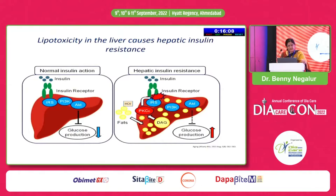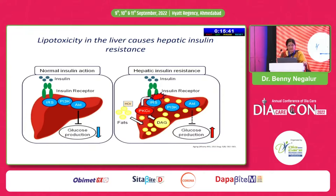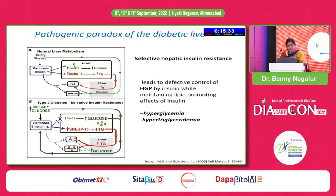It is the lipotoxicity in the liver that gives rise to hepatic insulin resistance. Insulin resistance causes disturbance of post-receptor signaling, primarily because of excess diacylglycerol, which up-regulates and down-regulates key messengers, altering glucose production and causing hyperglycemia.